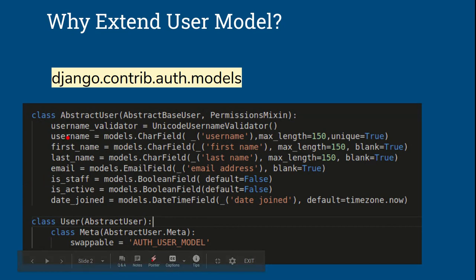In certain conditions, we may want to use a login system like Facebook — using a primary field to login with a password. We can use the password via email or phone number. In the built-in user model, the username is a compulsory unique field. But if we want to use email or phone number as login, in that condition we need to extend the user model.